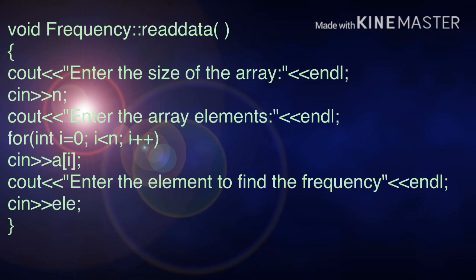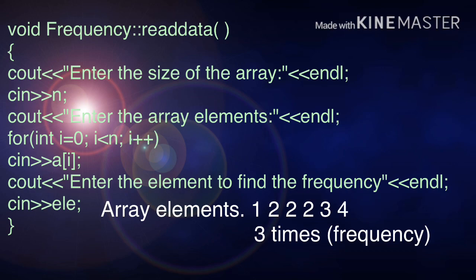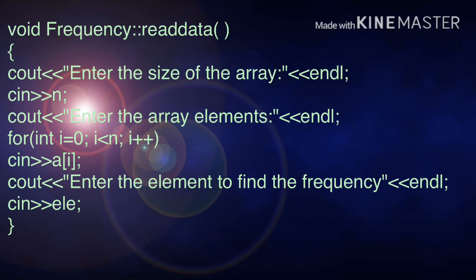After entering the value for array, next is which element frequency you want to find out. So if you have given 1, 2, 2, 2, 3, and 4, you are going to give 2. 2 is your element here. Element is 2. Total number of times 2 is repeated in an array is 3 times. So frequency is 3.